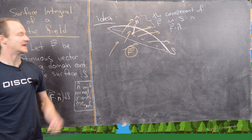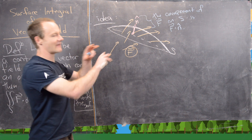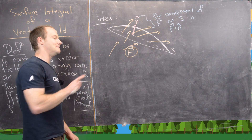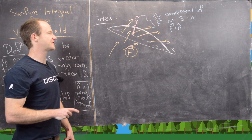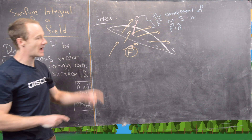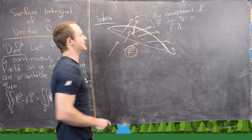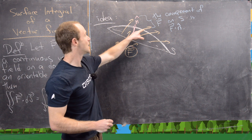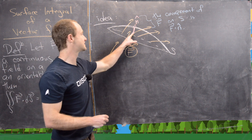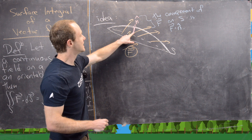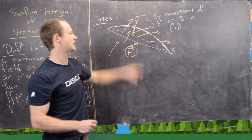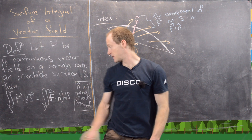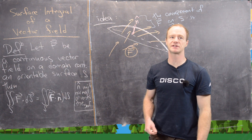The idea behind this is the following. We want to think about having some sort of two-dimensional surface in a vector field, and then measure the components of that vector field as they pass through the surface. At a single point along the surface, how much is the vector field pushing through the surface at that point depends on the component pointing in the normal direction. You calculate that component by computing F dot n, which is why F dot n shows up in the definition of the surface integral of the vector field.